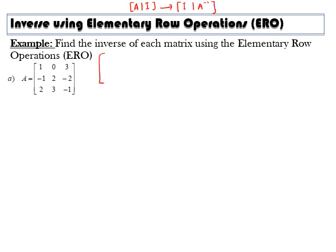The step is: column by column, we will find number 1 first and then 0, 0. Then proceed with 1, 0, 0 and then 1, 0, 0. So I will start.